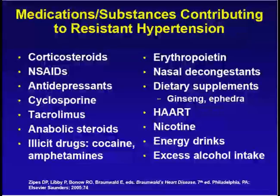There is a long list of medications which can also lead to resistant hypertension. Important ones are NSAIDs or non-steroidal anti-inflammatory drugs, corticosteroids, and antidepressants. Additionally, nicotine, energy drinks, and excessive alcohol intake are also components contributing to this particular condition.